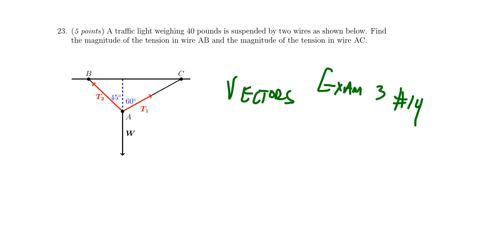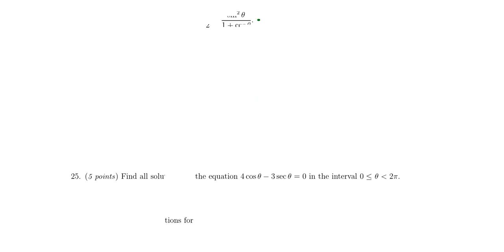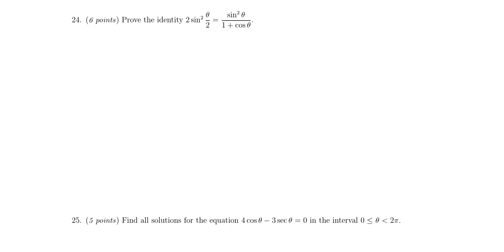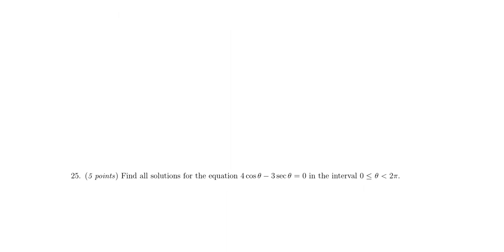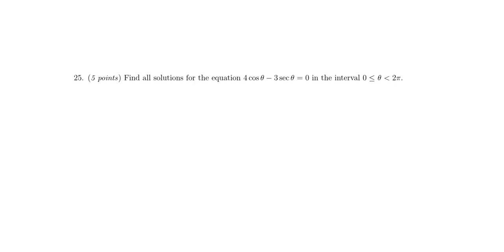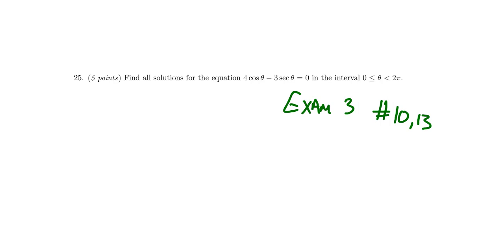Question twenty-four, as mentioned, is a more advanced trigonometric proof worth six points. And question twenty-five — the last question — is about solving a trigonometric equation. It won't be a linear equation; it'll be more advanced, essentially quadratic, requiring factoring or the quadratic formula. Trigonometric identities might also be appropriate — for example, if you have both cosine and secant in the same equation, those are incompatible, so you'd need an identity to reconcile them. We saw these types of equations on exam three; look at questions ten and thirteen, or go back to the exam syllabi or their corresponding sections for more practice.